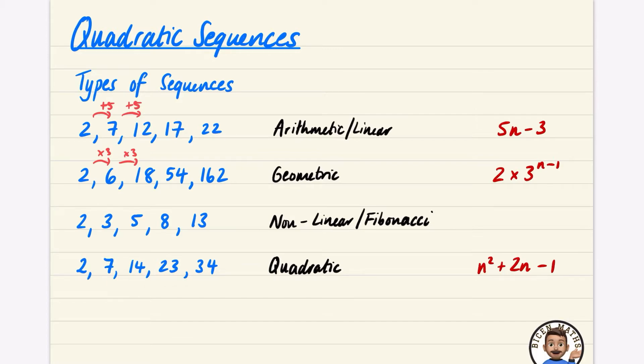Then we have a quadratic sequence here, and you can see why it's called a quadratic sequence because the nth term looks like a quadratic. Remember, in the nth term, n is relating to the position that you have here.